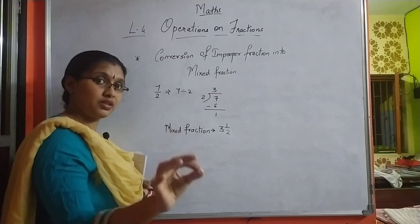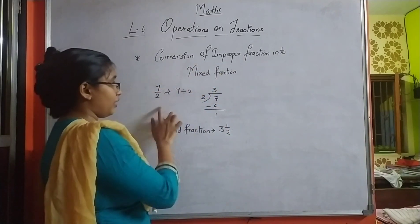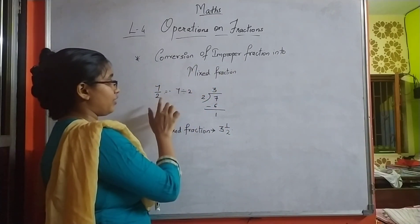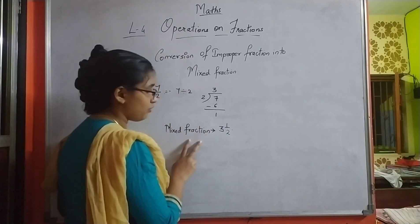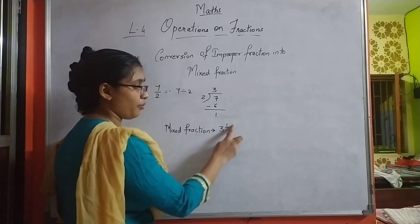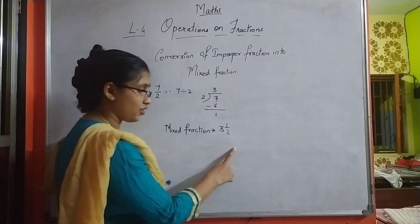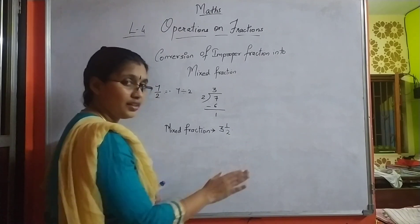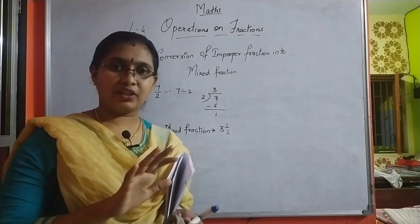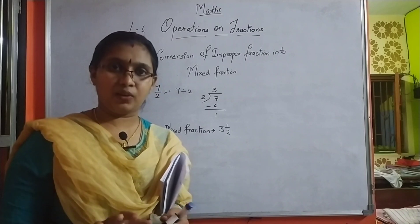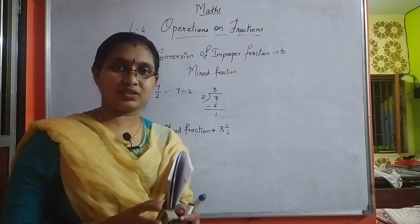Children, make note: in an improper fraction the numerator is bigger than the denominator. But when we write it in mixed fraction form, the fraction part is a proper fraction where the numerator is less than the denominator. So whenever you are solving, keep this in mind — the question will have a numerator greater than the denominator, but after conversion we get a proper fraction. Understood? Very well done.